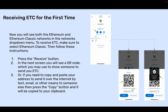Receiving ETC for the first time. Now you will see both the Ethereum and Ethereum Classic networks in the Networks drop-down menu. To receive ETC, make sure to select Ethereum Classic. Then press the Receive button. In the next screen, you will see a QR code which you may use to show someone to send you ETC. Or, if you need to copy and paste your address to send it over the Internet by text, email, or other means, press the Copy button and it will be copied to your clipboard.